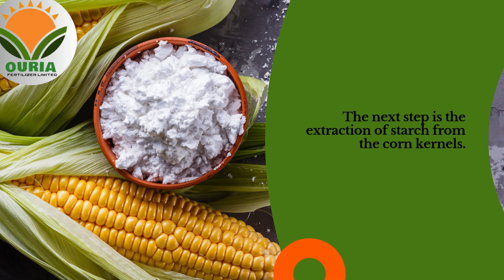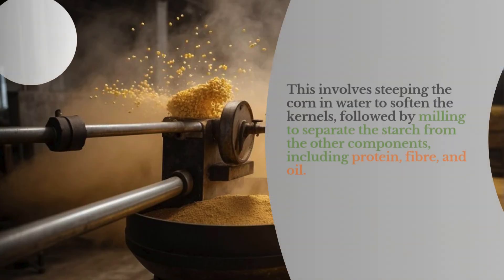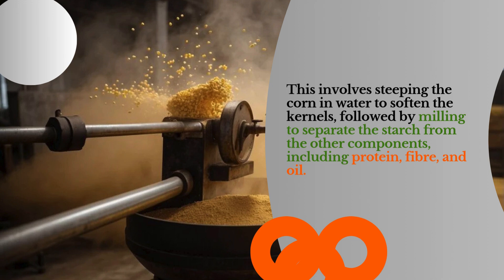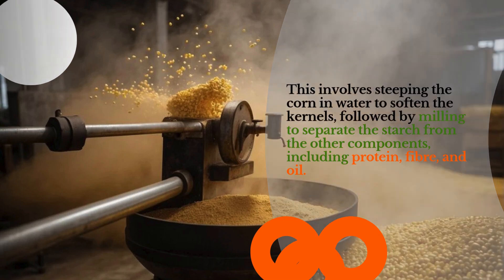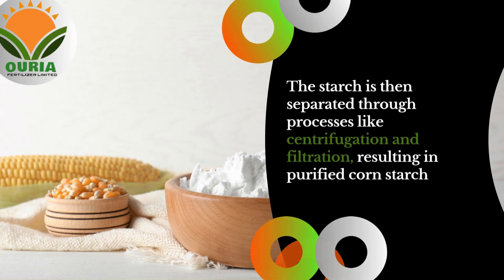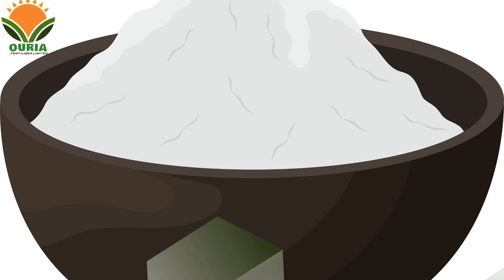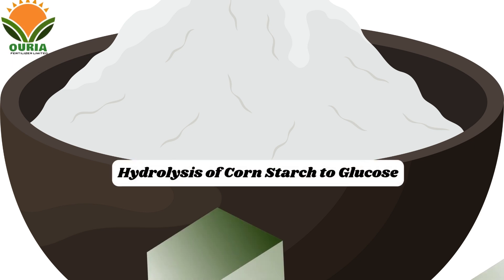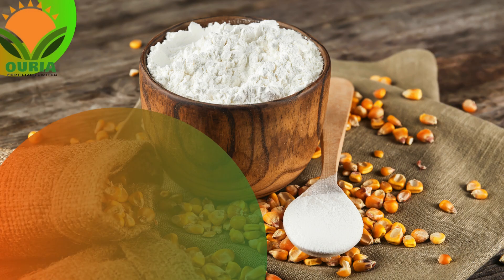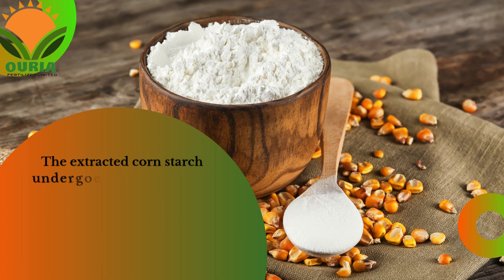Corn starch extraction: The next step is the extraction of starch from the corn kernels. This involves steeping the corn in water to soften the kernels, followed by milling to separate the starch from other components including protein, fiber, and oil. The starch is then separated through processes like centrifugation and filtration, resulting in purified corn starch.